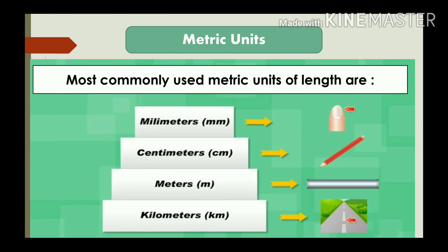The most commonly used metric units of length are millimetres (mm), centimetres (cm), metres (m), and kilometres (km), listed here from smaller to greater. A fingertip is about one millimetre, the length of a pencil is about centimetres, a pipe's length is about metres, and the distance from one city to another is measured in kilometres.